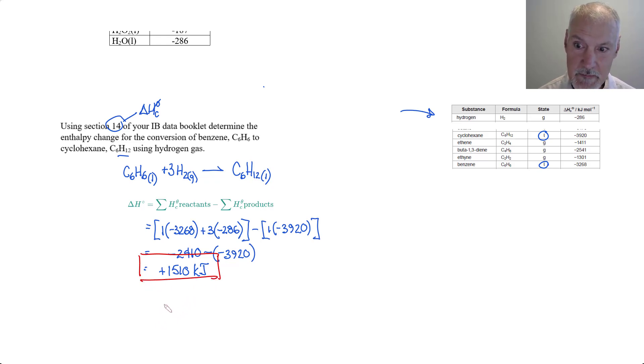Be very careful in your choice of equations. When using combustion data, it's reactants minus products. However, when using formation data, it's products minus reactants. Check your IB data booklet when you're doing these questions.